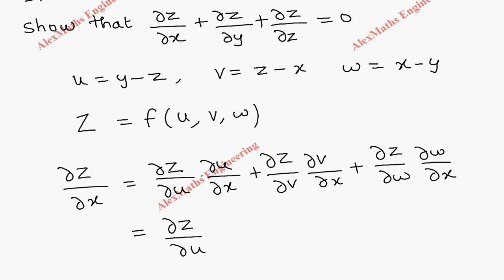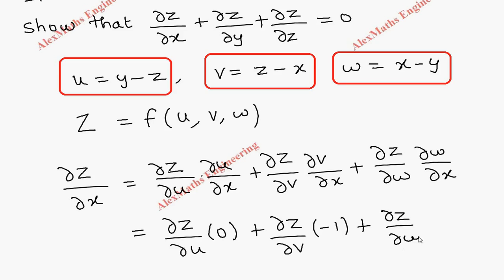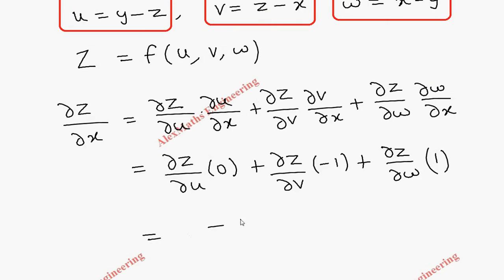We find the partial derivatives with respect to x. The partial derivative of u with respect to x: both other variables are constant, so this is 0. Then ∂v/∂x is minus 1. And ∂w/∂x is 1. So the first term is 0, leaving us with minus ∂Z/∂v plus ∂Z/∂w. Let's name this expression 1.